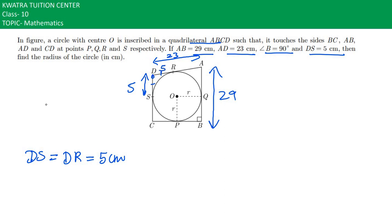What will be AR then? Now we know DA is equivalent to DR plus RA. DA is equal to 23, DR is equal to 5. Substitute and you can find out, so 23 minus 5 would be there. RA is equal to 18 cm.